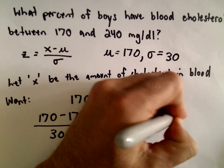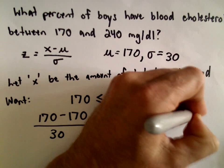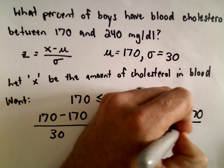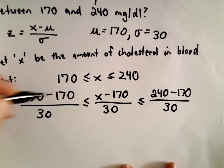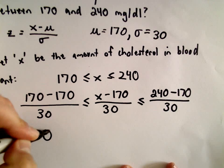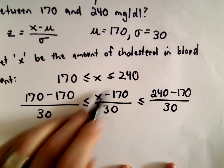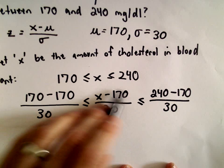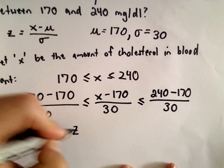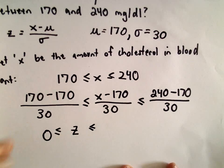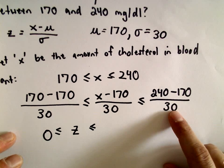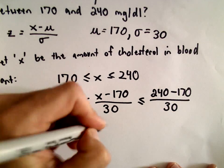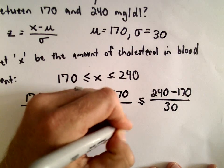We take 240 minus 170 and divide by 30. The first part is easy: 170 minus 170 is zero, divided by 30 is still zero. So our z-score on the left is 0. And 240 minus 170 gives us 70; 70 divided by 30 is roughly 2.33.